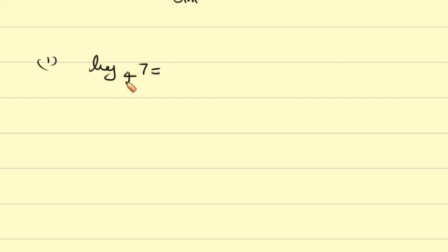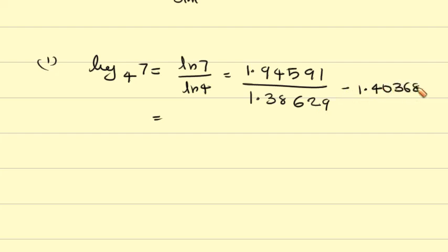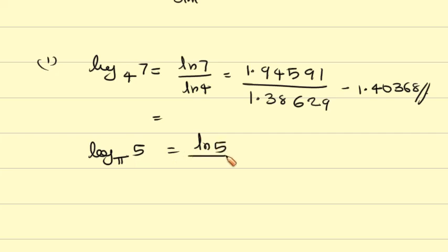What is the value of log 7 to the base 4? ln 4 equals approximately 1.38629. The result is approximately 1.40368, so log 7 to the base 4 equals approximately 1.40368. Similarly, log 5 to the base pi equals ln 5 over ln pi, giving a final answer of approximately 1.40549.